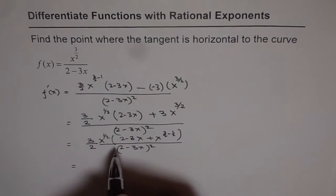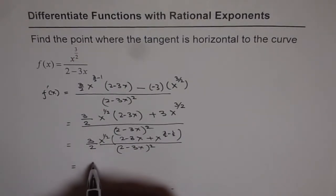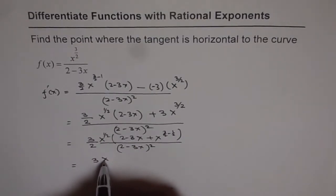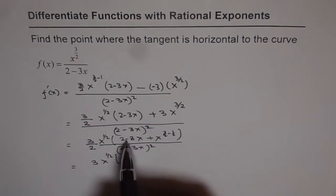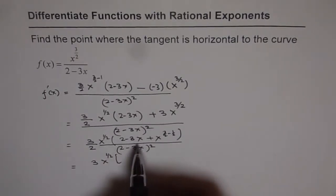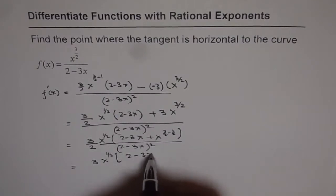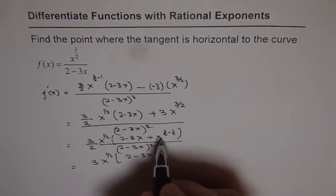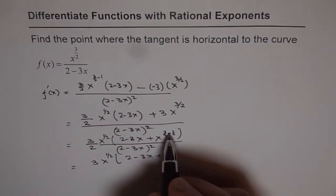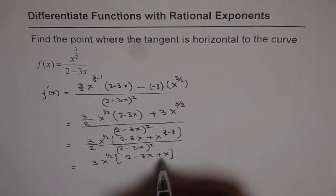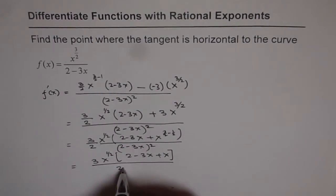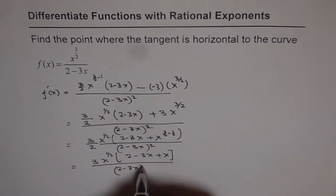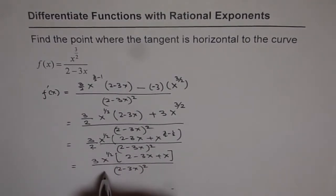We can simplify this and write the numerator as 3x to the power of half, and within the bracket we have 2 minus 3x plus x, since x to the power of 3 over 2 minus 1 is x to the power of 1 half, giving just x. The denominator is 2 minus 3x whole square times 2.